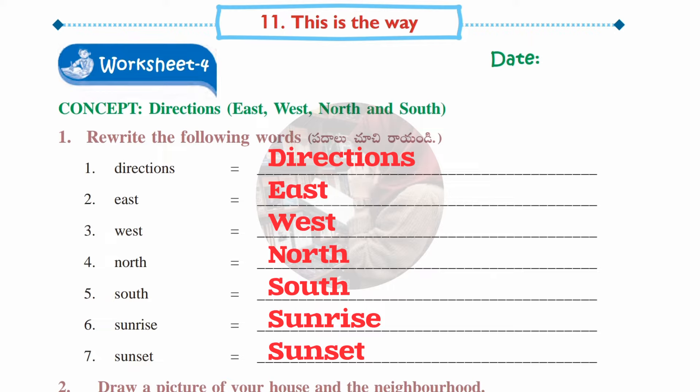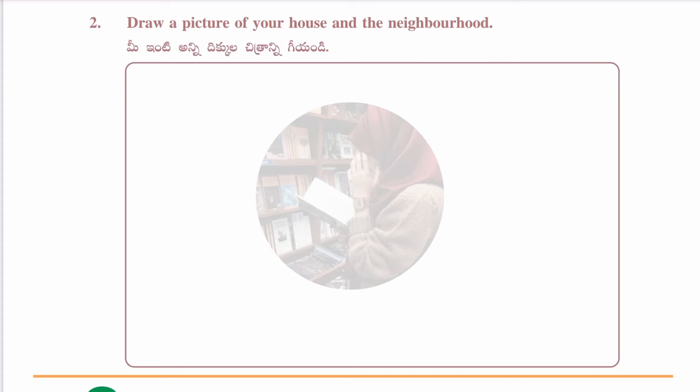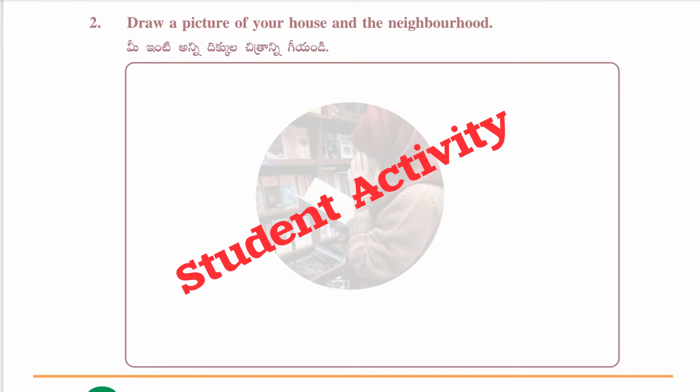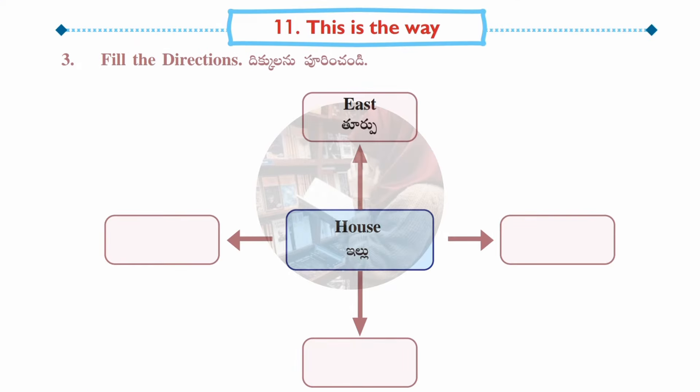The second section is a student activity — draw a picture of your house and the neighborhood. You need to draw your house and your surrounding area. If parents are watching, please help your kids to draw.